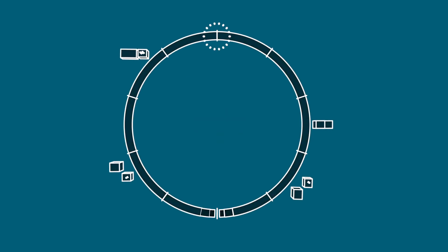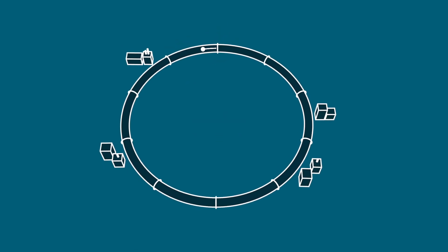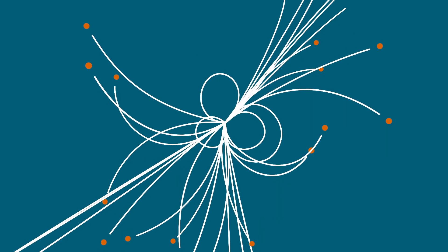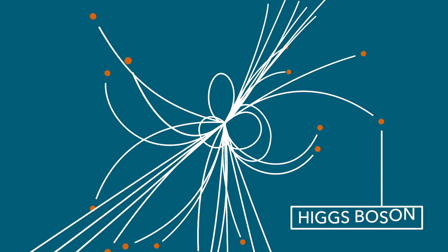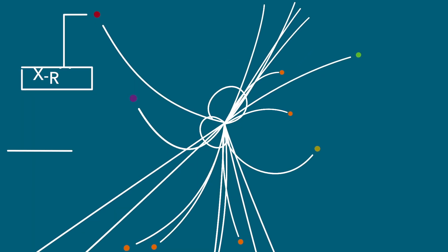In particle colliders, for example, we give particles a ton of energy and accelerate them to almost the speed of light. Then, we smash them together, and boom! New particles are created from the energy released during the collision. We've discovered new particles like the Higgs boson that way, and we've also figured out ways to produce lots of certain kinds of particles for scientific use.